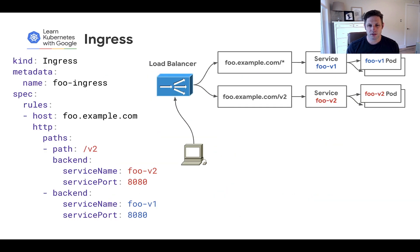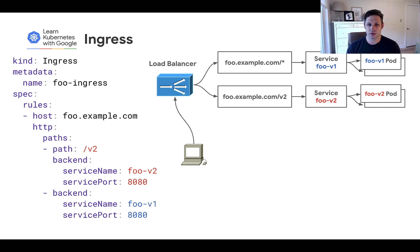But first, let's take a look at the ingress API and what it does for Kubernetes today. Just like Gateway resources, an ingress configures an underlying load balancer. This ingress manifest tells the load balancer to match traffic going to foo.example.com.